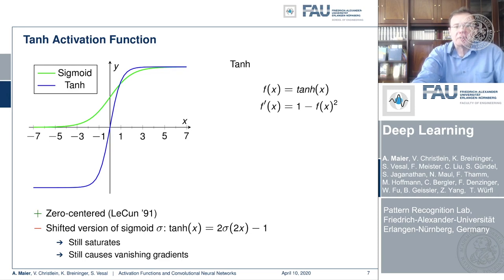A very popular alternative is the hyperbolic tangent. It is shown here in blue and has very nice properties — for example, it's zero-centered and has been used by LeCun since 1991. You could say it's a shifted version of the sigmoid function, but one main problem remains: the saturation. You can see that maybe at two or minus two the derivatives are already very close to zero, so it still causes the vanishing gradient problem.